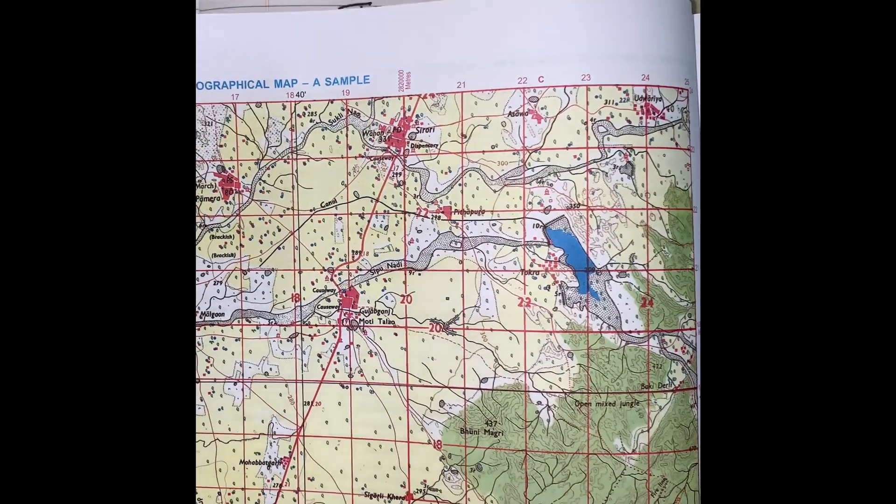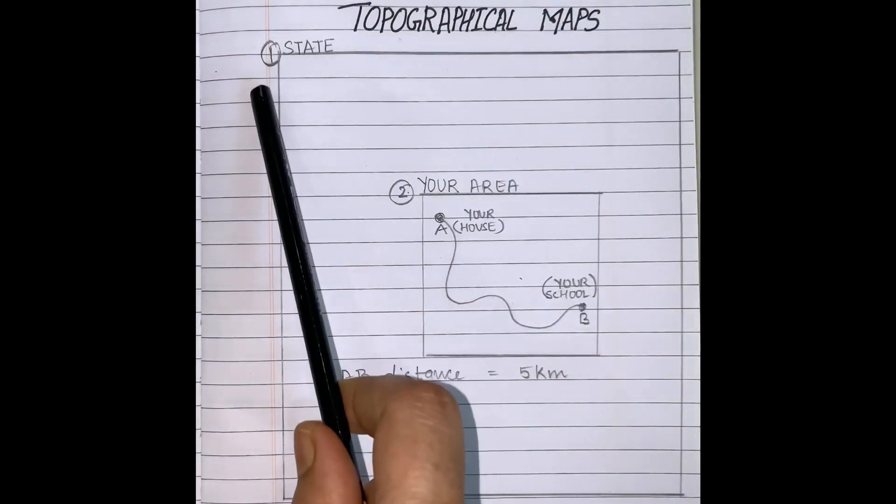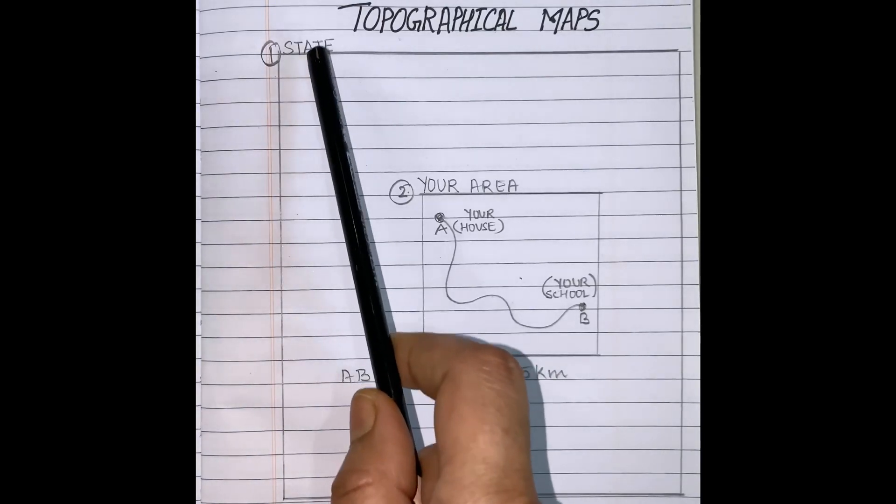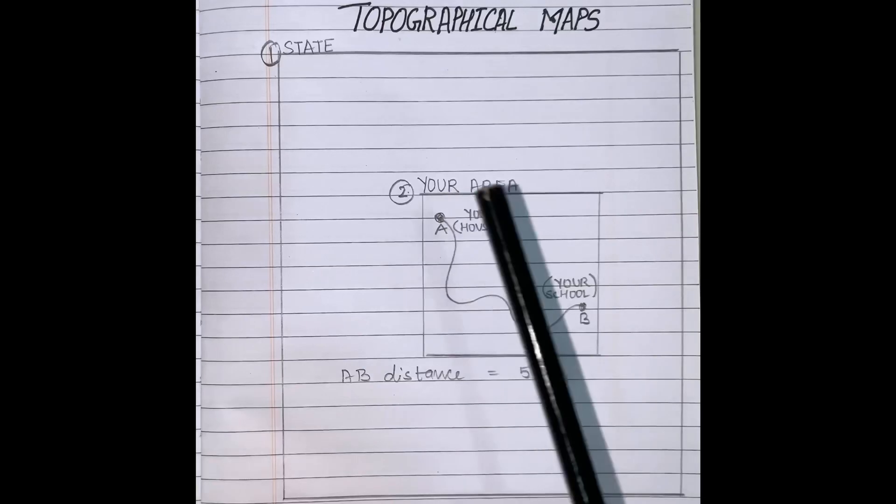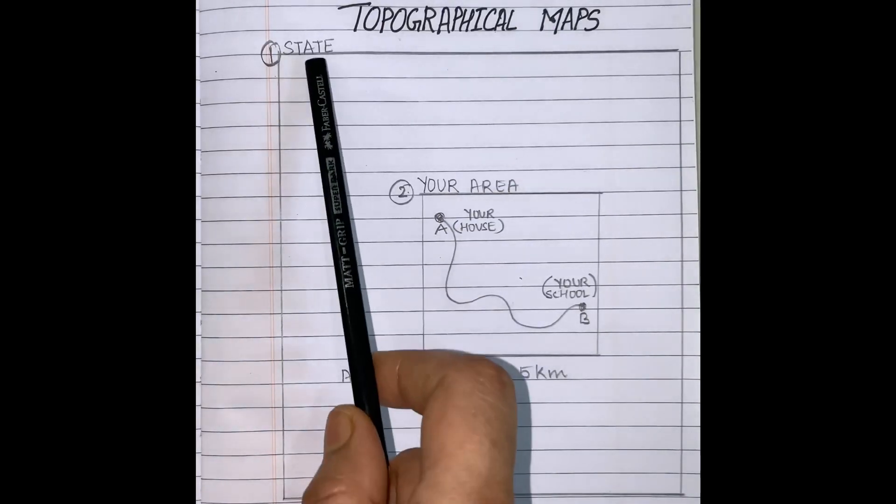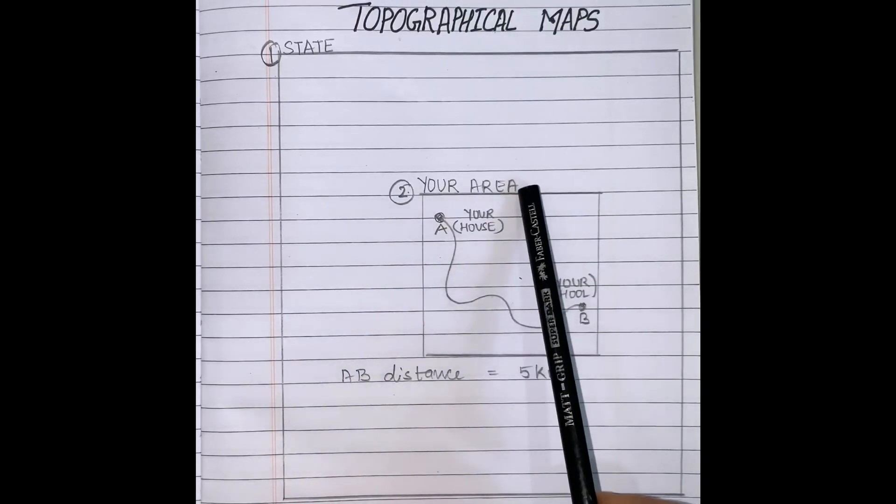I will explain with the help of an example. I have drawn one big box—it is a state. Suppose it is the state wherever you are residing. It can be Bihar, West Bengal, Karnataka, any state. Inside the state I have drawn another small box, that is your area where you are living.